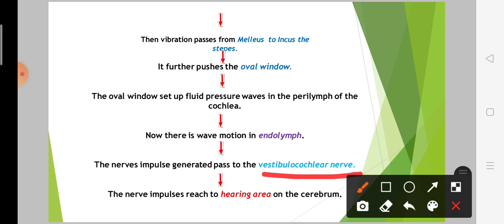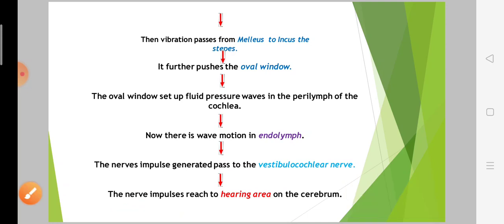The vestibulocochlear nerve is the 8th cranial nerve. These impulses travel through the vestibulocochlear nerve to the brain. The nerve impulses reach the hearing area, and then the impulses are converted on the cerebrum.